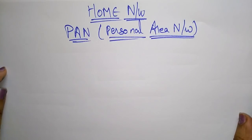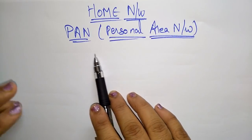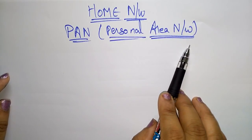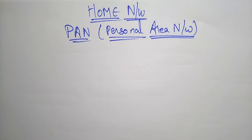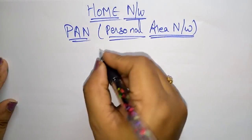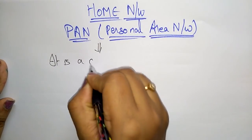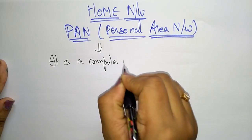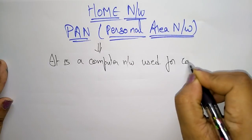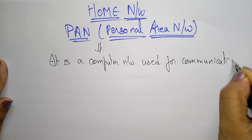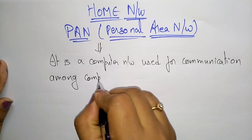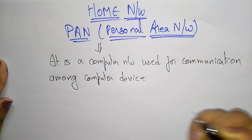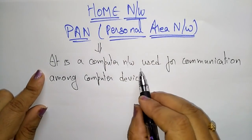Moving to the next topic in computer networks: home networks. One type of home network is the PAN — Personal Area Network. The name indicates it is a personal network, meaning whatever connections we use within our home. PAN is a computer network used for communication among computer devices — any electronic gadget such as a tablet or telephone.